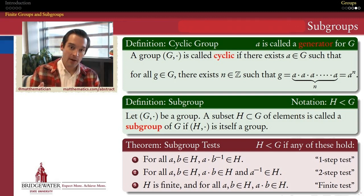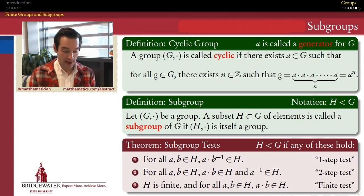They're ways of telling whether a subset that you give me actually rises to the level of being a subgroup. So I'm going to present the proof of just the one-step test in this video. But you should convince yourself that the two-step test and the finiteness test are also equivalent to the one-step test that we'll look at.